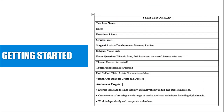Now we have some formalities before getting started. The basic layout of a lesson plan includes the teacher's name, date, duration, grade, stage of artistic development for visual arts plans, subject, focus question, theme, topic, unit, title, visual arts strands, and attainment targets. Some of this information is directly from the curriculum and some the teacher will provide.